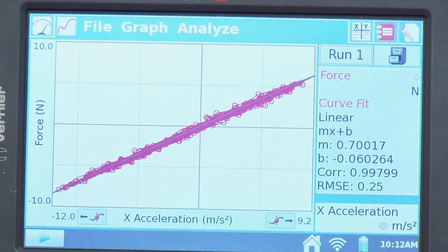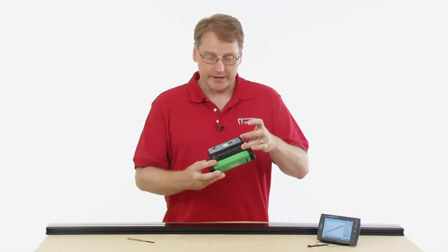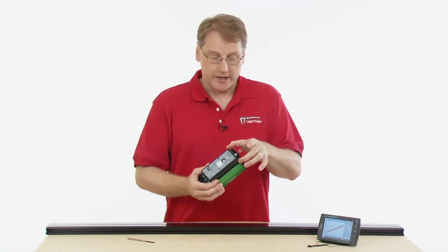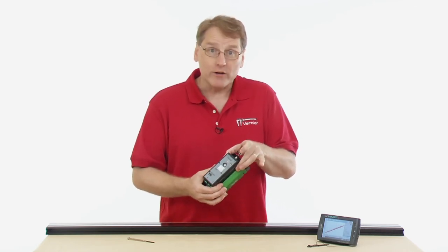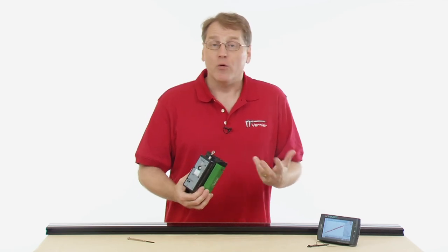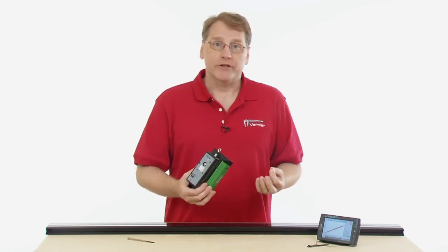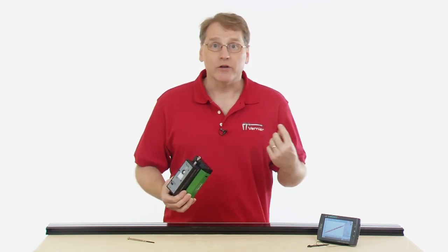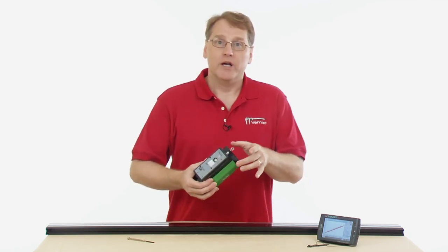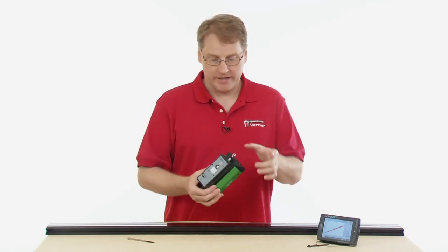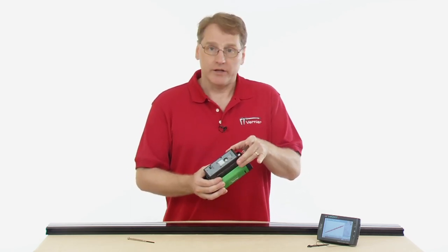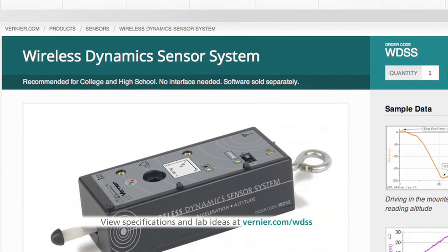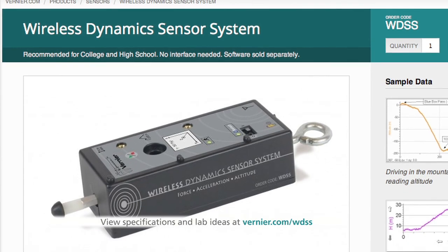I might use that for a Newton's second law lab. This sensor is great for using with physics. The nice part is the fact that it is wireless. You don't have the wires impeding what you're doing. You can use it on a cart and track. You can mount it, do centripetal accelerations with it if you wanted to. Amusement park physics, all those kinds of things are really excellent to do with this particular sensor. For a booklet of labs using the wireless dynamic sensor system, see the Vernier website.